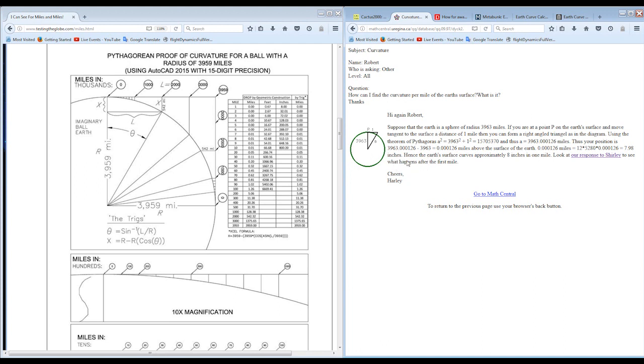They say after you do all the long-form math, it ends up being 7.98 inches, or like we said, everybody's just kind of rounding it up to 8 inches per mile. But then it says, look at our response to Shirley to see what happens after the first mile.